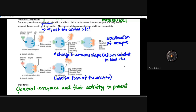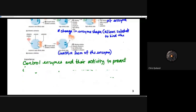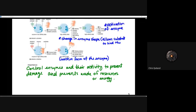Allosteric activation and inhibition are mechanisms the body uses to control enzyme activity based on specific circumstances — preventing damage and avoiding waste of resources or energy. Think of allosteric inhibition and activation as a means to control the rate at which certain resources are utilized. Enzymes need to be turned on and off depending on the presence of certain molecules, because running at full speed all the time, or not at all, are both problematic.